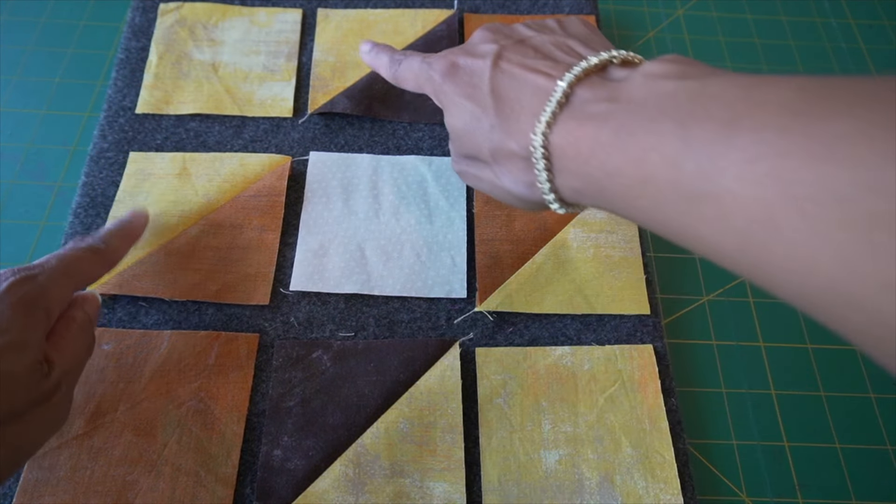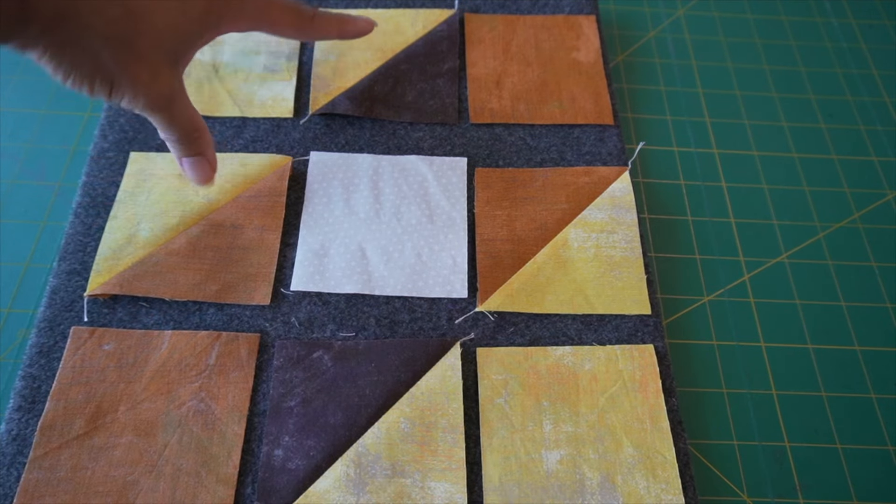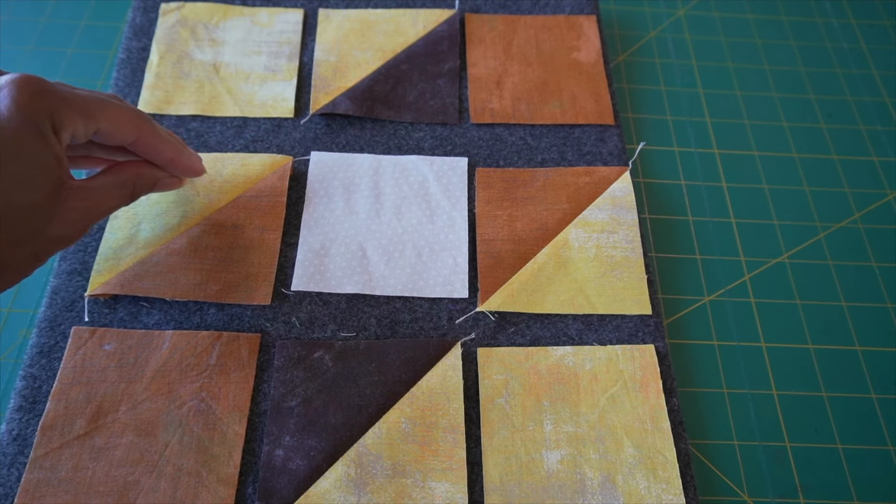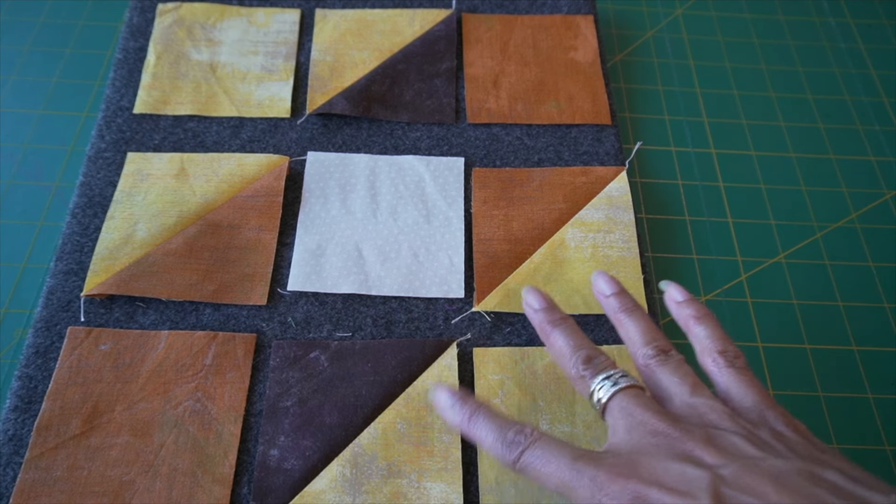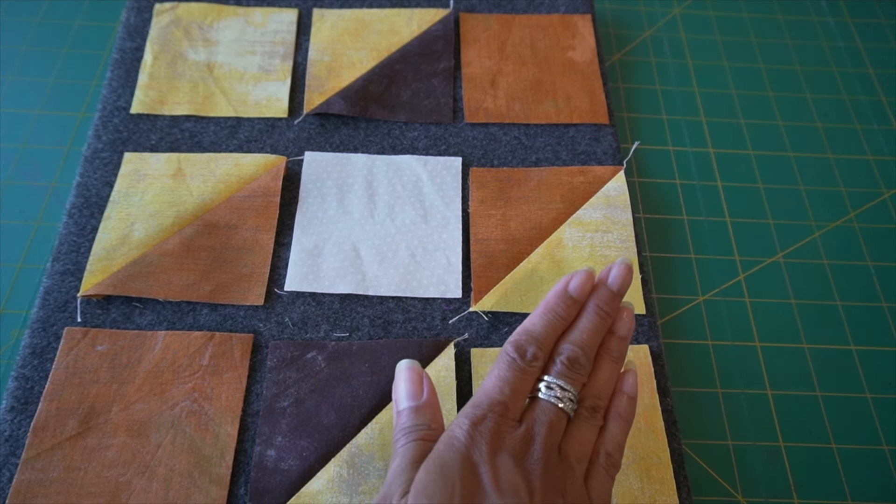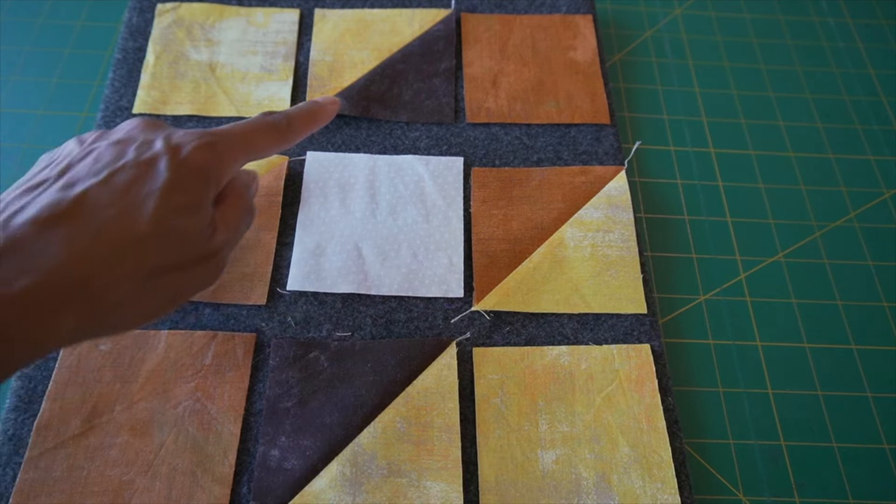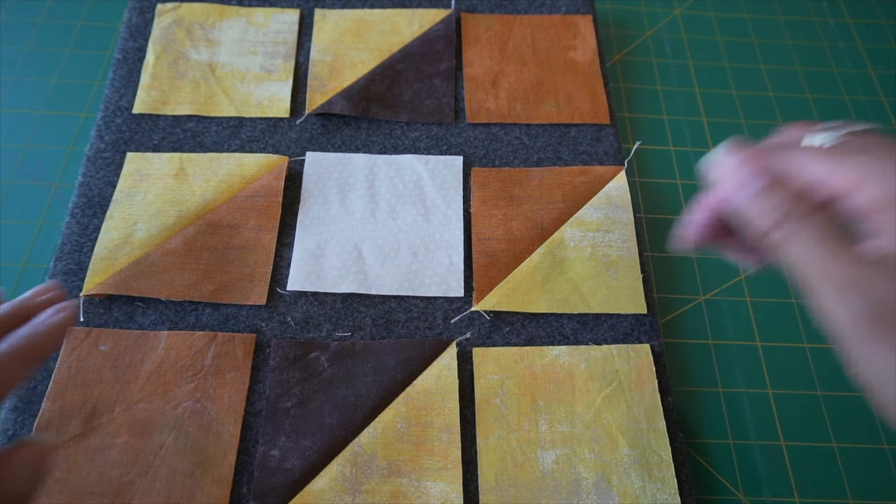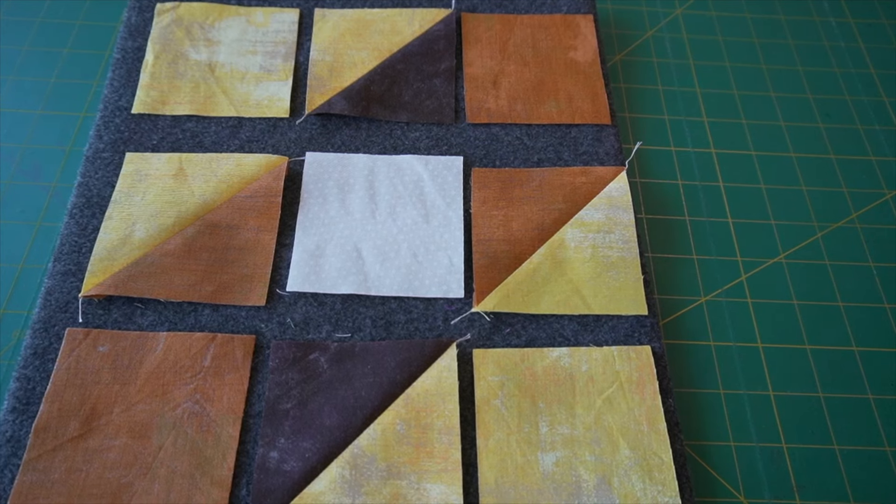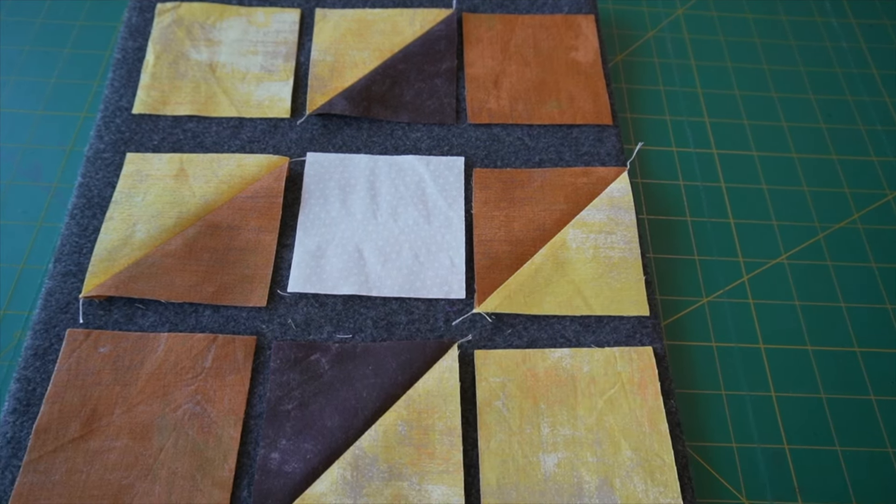Again, these are two half-square triangles and that square. So when I piece this together, this will look like one large half-square triangle. And the same thing here, these two smaller ones in the square, once it's sewn together, it'll look like one large half-square triangle. And then we have those center brown pieces, the white square, and the rest of the burnt orange. So stay tuned! I will show you what the whole block looks like once it's sewn together.